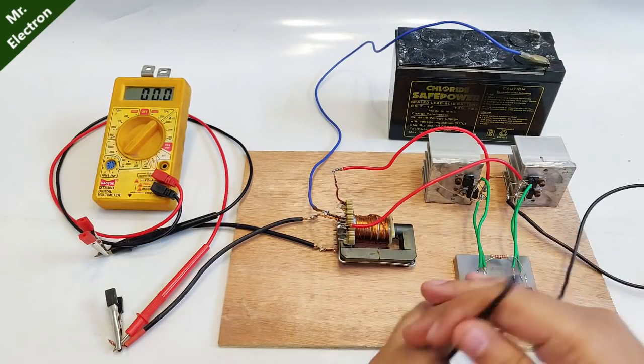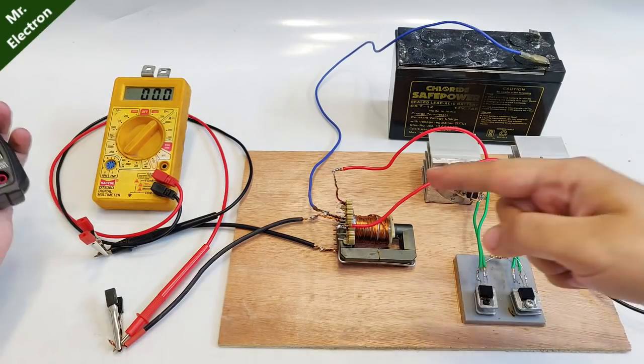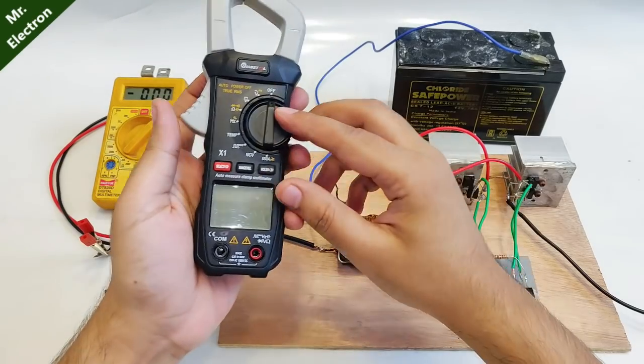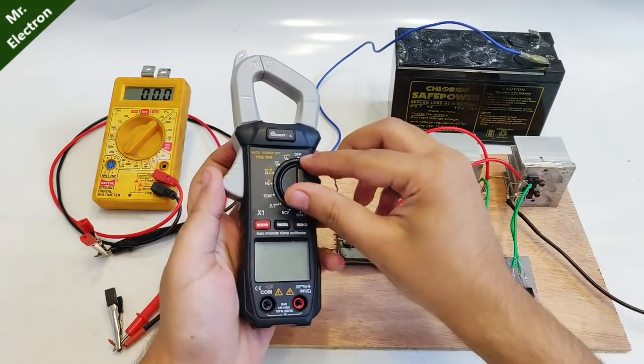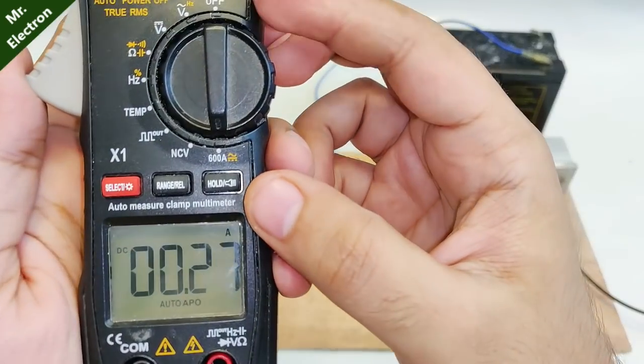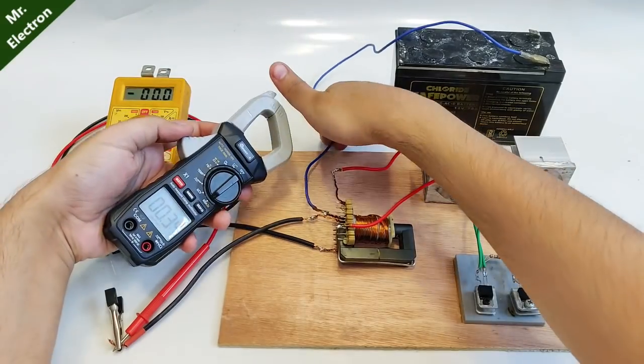There is one thing that needs to be noticed: there's no hissing sound from the transformer. This is no load. I'm going to measure the current that this circuit is drawing from the battery at no load, pointing the meter at 600 amp DC mode.